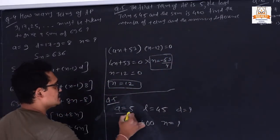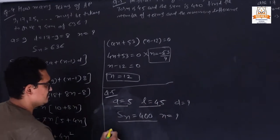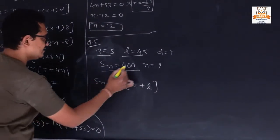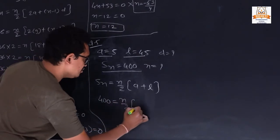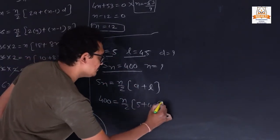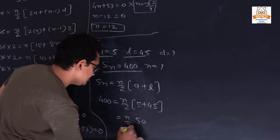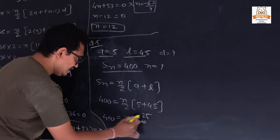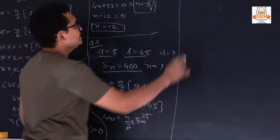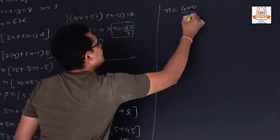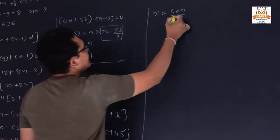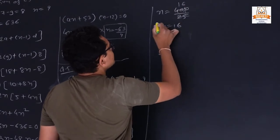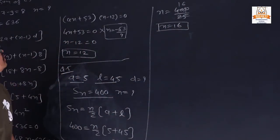Since the first term, last term, and sum are all given, we use the formula Sn = n/2 × (a + l). So 400 = n/2 × (5 + 45) = n/2 × 50. This gives 400 = 25n, so n = 400/25 = 16. Therefore n = 16.